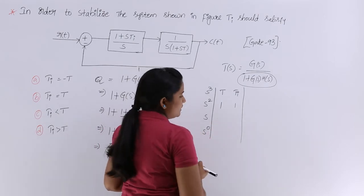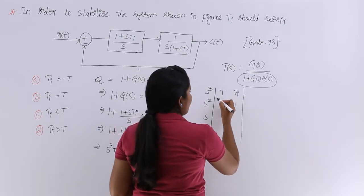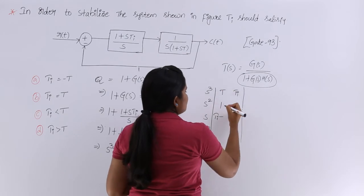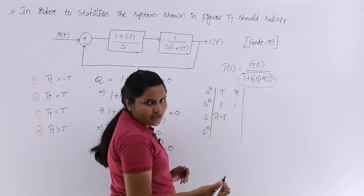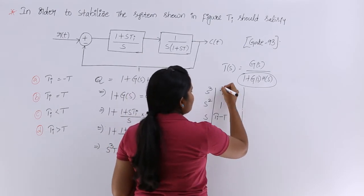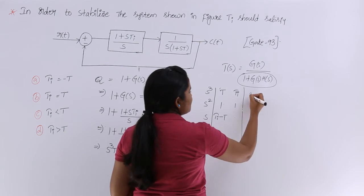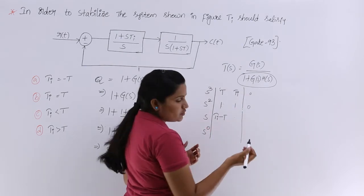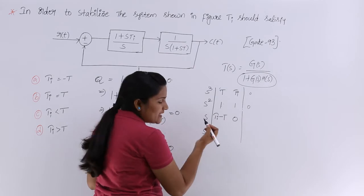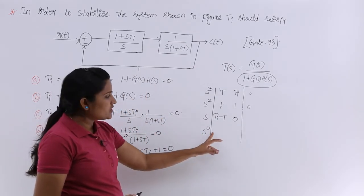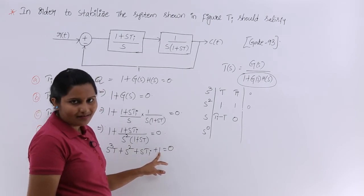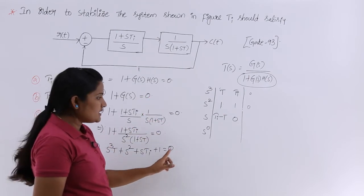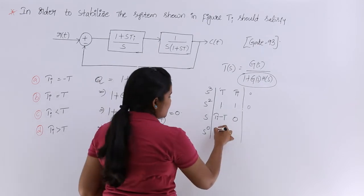To compute the S¹ row element: (1 × Ti − T × 1) / 1 = Ti − T. For the next element in that row, we imagine a 0 in the cross position, so (1 × 0 − T × 0) / 1 = 0. The S⁰ row is always the constant term from the characteristic equation, which here is 1.